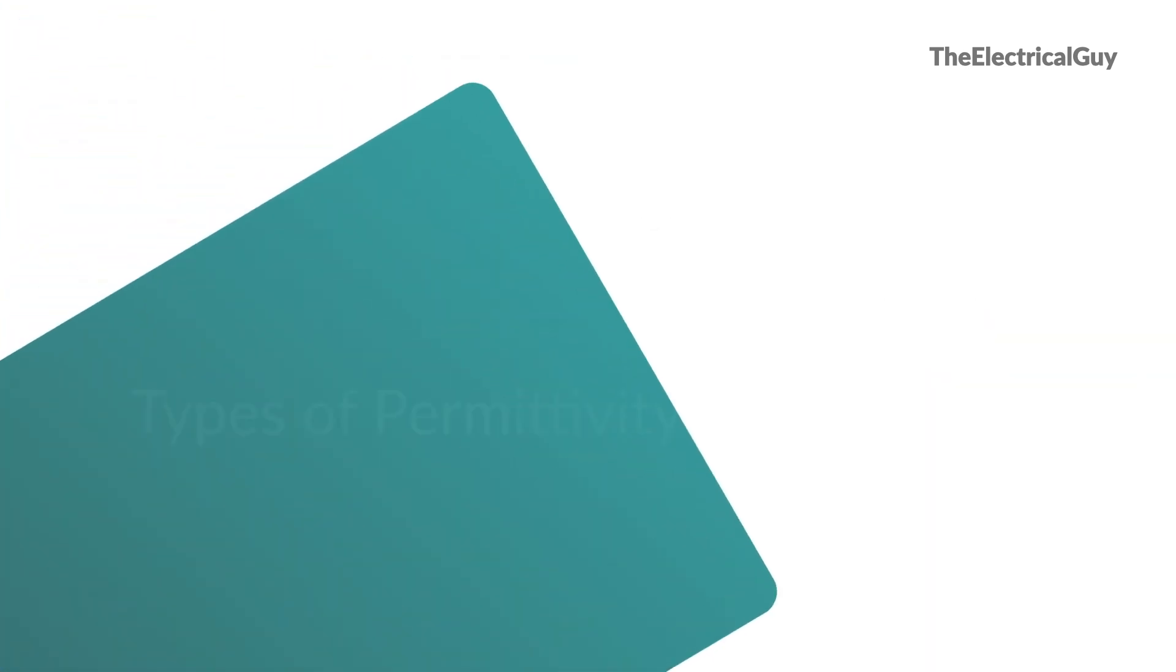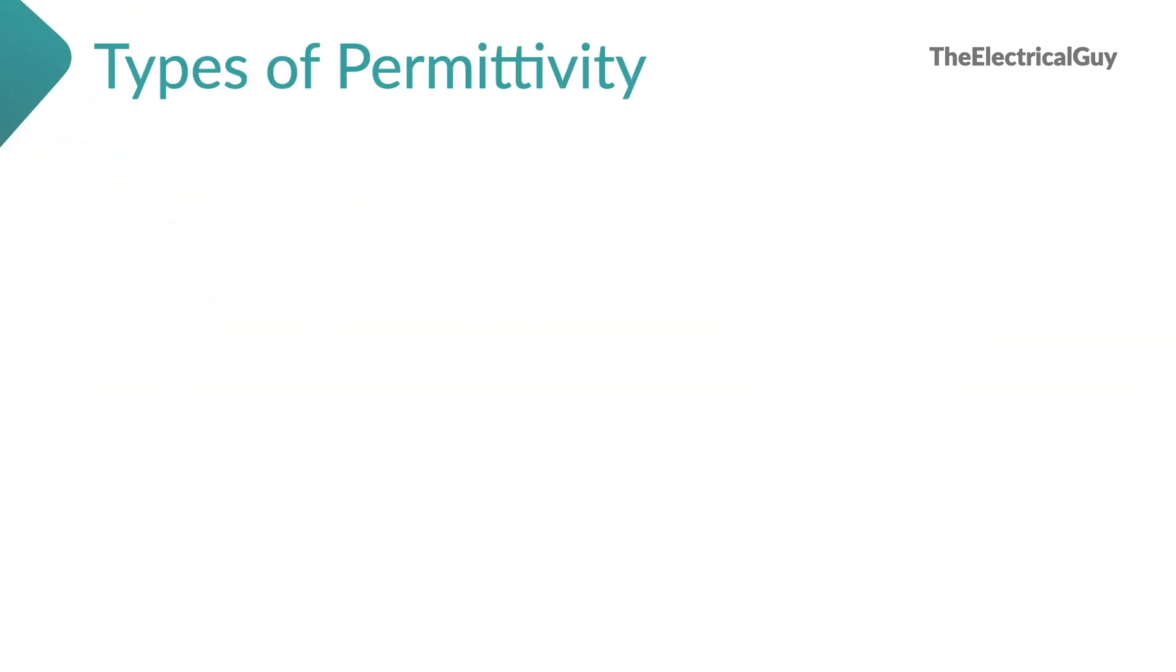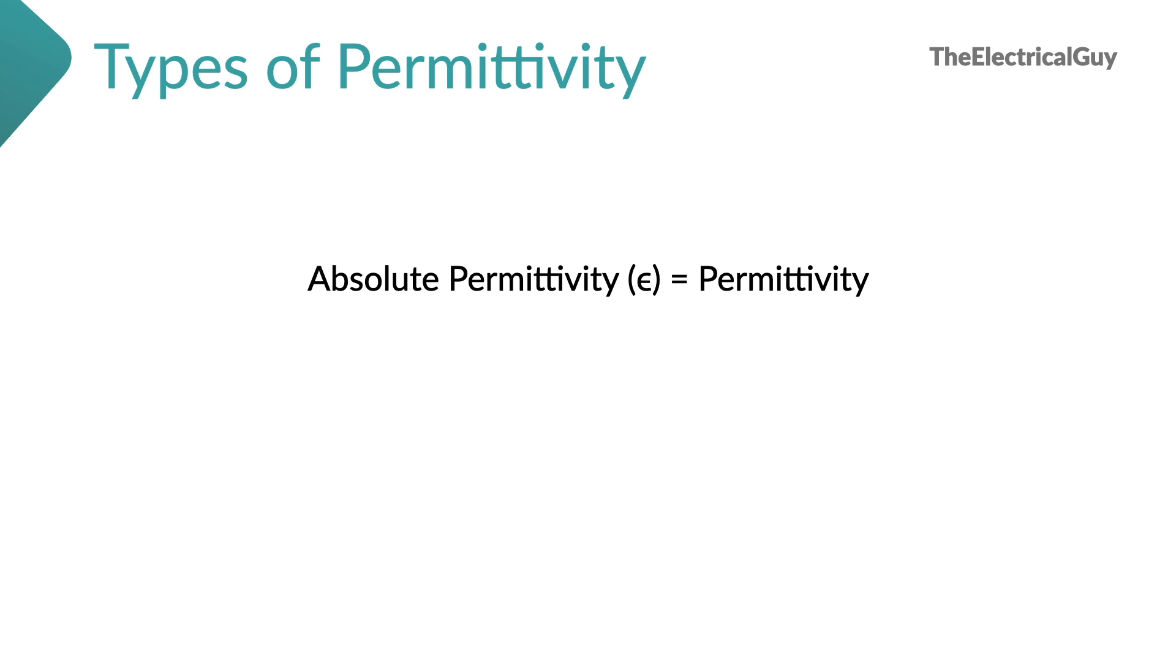There are two types of permittivity. One is absolute permittivity which is nothing but simple permittivity. Or in simple language we can also refer permittivity as absolute permittivity. The second one is relative permittivity. Denoted by epsilon r.